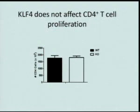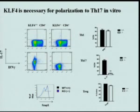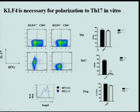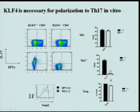Interestingly, there was no difference in CD4 T cell proliferation, and there was also no difference in the TH17-Treg axis — no compensation for the loss of TH17. The cells appeared to remain in an undifferentiated though proliferative state.